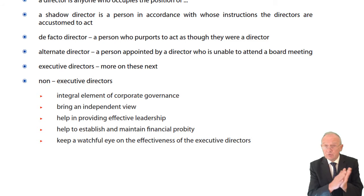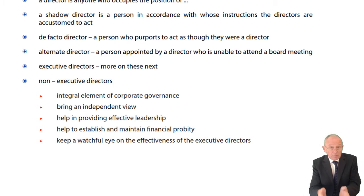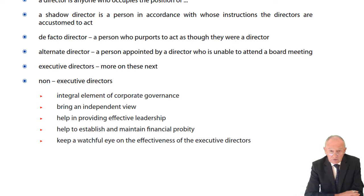Shadow director: a person in accordance with whose instructions the directors are accustomed to act. This excludes bankers, accountants, and solicitors, because otherwise all auditors would be classed as directors. When the bank says you must do this, or the lawyer says you have to do that, the directors will take action accordingly. So bankers, auditors, and solicitors could be classed as shadow directors, but the law excludes them.